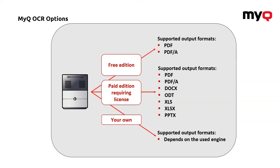The last option is about using your own OCR engine. If the company already owns an OCR engine and is used to it, you can make that OCR engine part of the MyQ scanning process. You can set it so that the OCR engine listens on a certain folder, gets all the incoming files, and then puts the processed files back to another folder while MyQ picks them up and sends them out. So even your own engine, provided it can work on a hot folder principle, can be part of this whole process and the scanning workflow of MyQ.